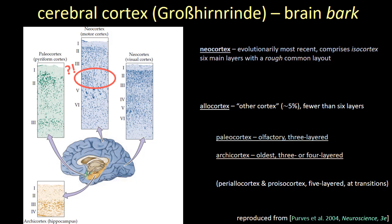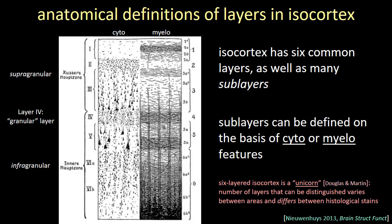Even though the isocortex has this rough common layout across the brain, there are regional differences as well — for example, motor cortex has no layer four. It's these regional differences in the laminar anatomy across the isocortex that allow us to define cortical areas based on their laminar anatomy. There are several anatomical definitions of layers based on cytoarchitectonic and myeloarchitectonic features, such as cell density, cell size, myelin content, and fiber orientation. We typically define the granular layer as layer four, with supragranular layers above and infragranular layers below. Sublayers can also be distinguished and vary a lot between areas.